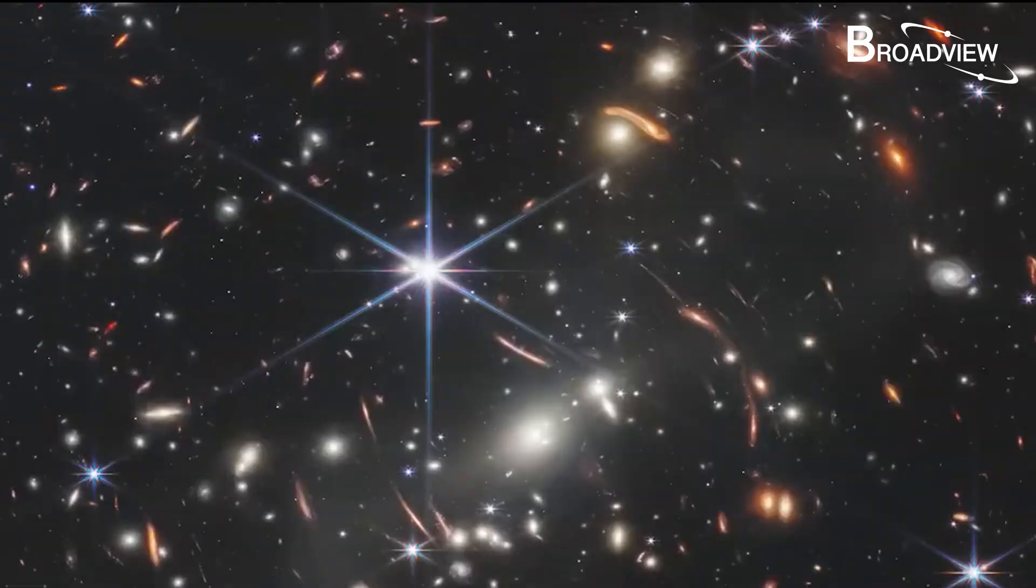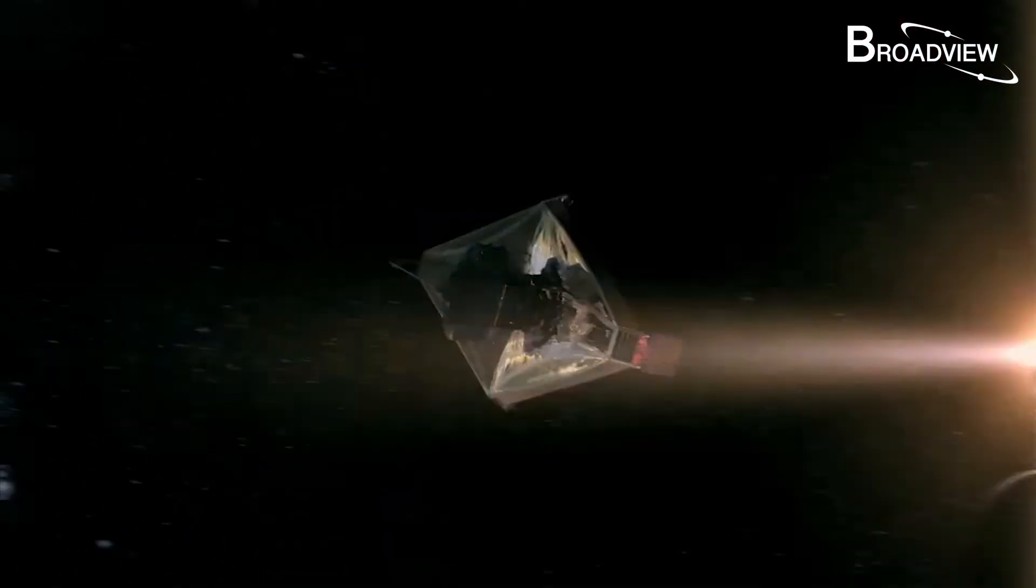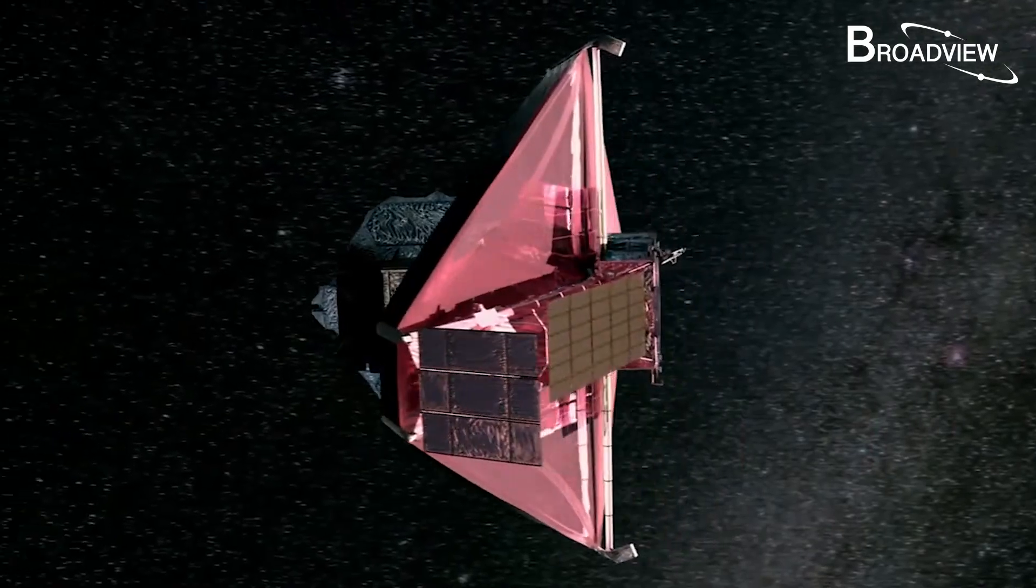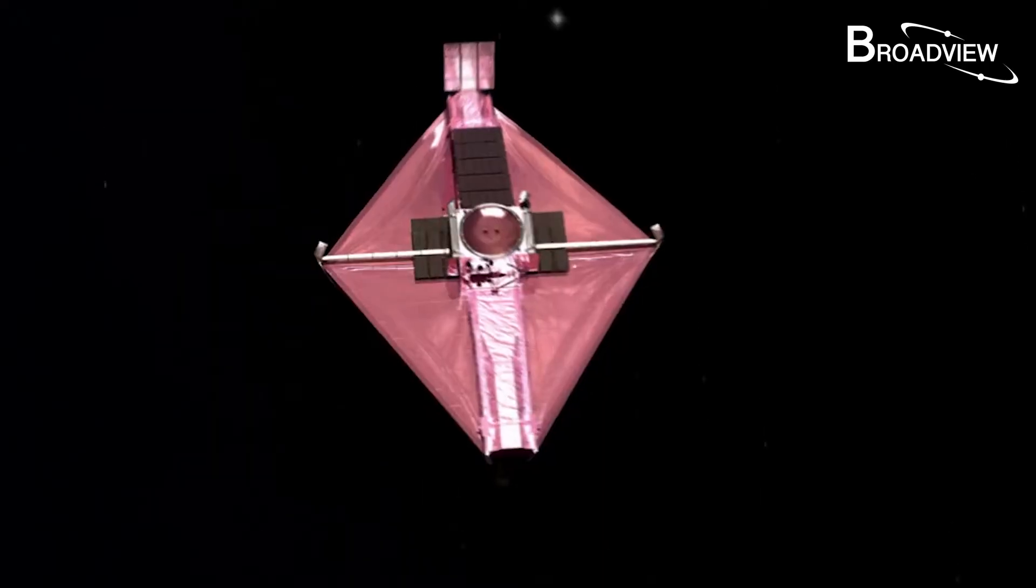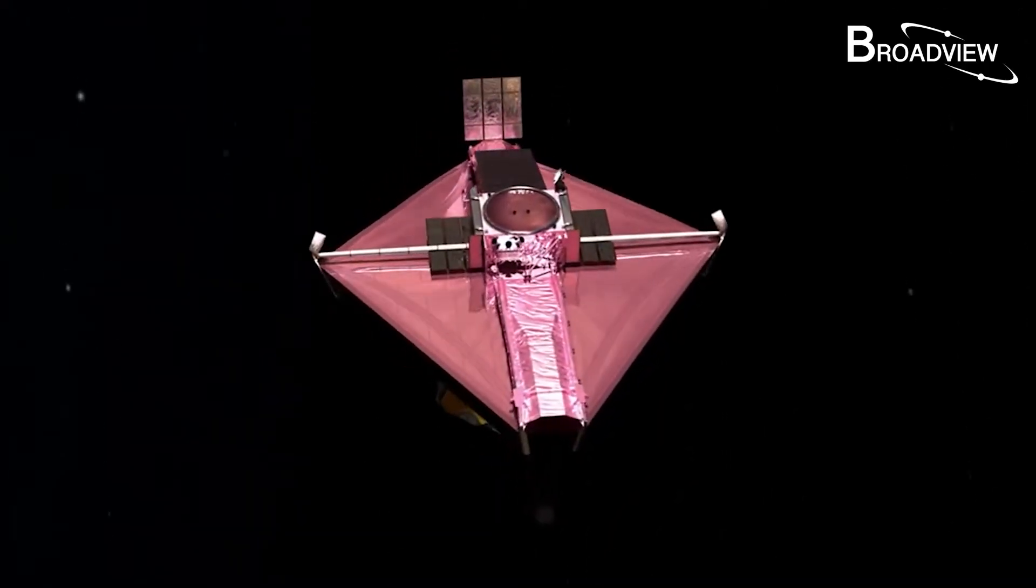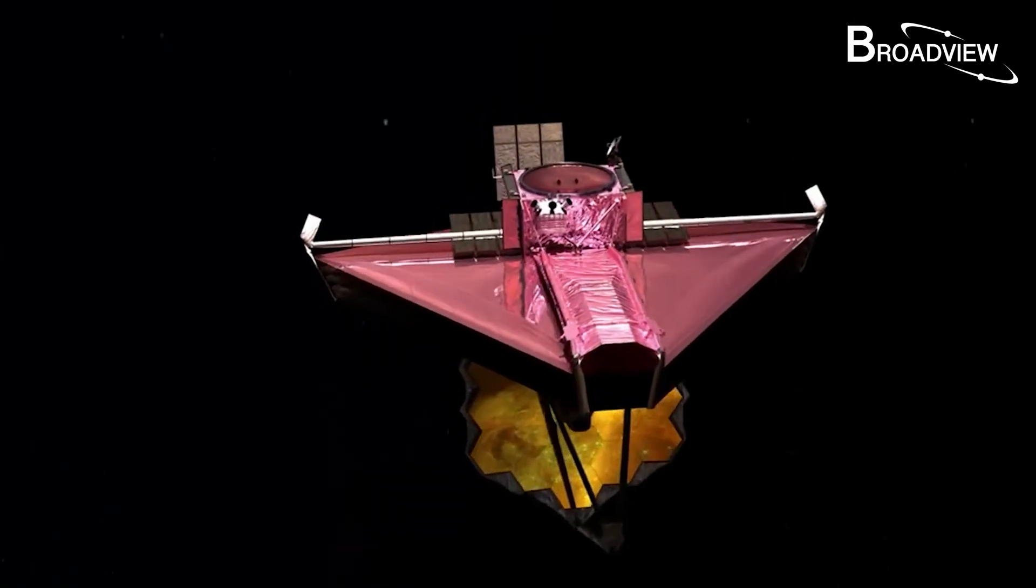This is the deepest, furthest, but also clearest image ever taken in human history. It took the James Webb telescope 12 and a half hours to take this picture. That might seem like a long time, but get this, it would take Hubble 10 days to capture just the outline.